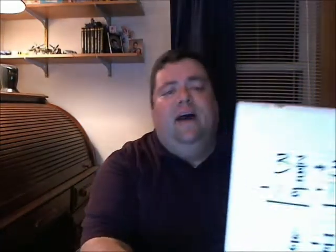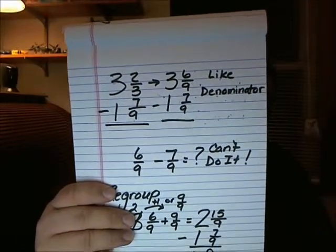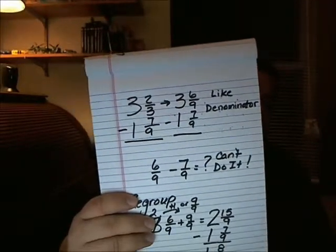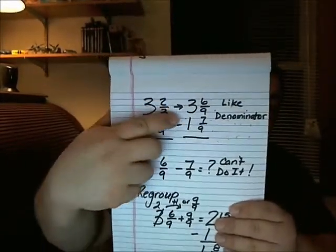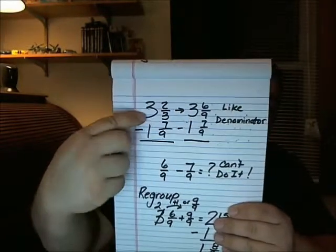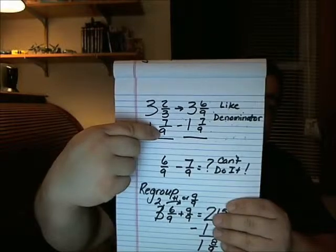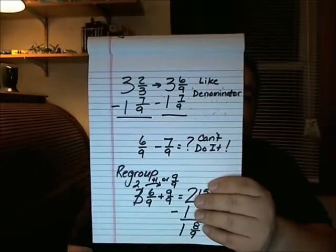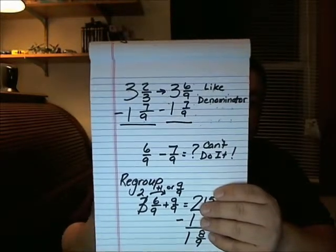As we're subtracting fractions, the thing to keep in mind is, just like in addition, I can't compare fractions unless they have the same denominator — or we call that the like denominator. So for example, if I have the fraction 3 and 2 thirds minus 1 and 7 ninths, I cannot subtract those until I get like denominators. In this case, ninths, because 3 will go into ninths. So the 1 and 7 ninths won't be changed, but for the 3 and 2 thirds we will find an equivalent fraction.